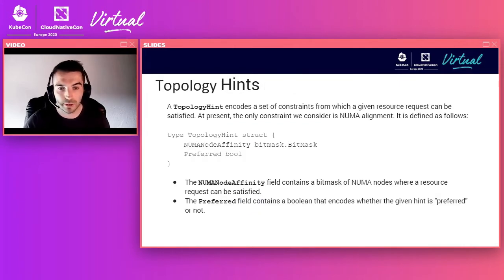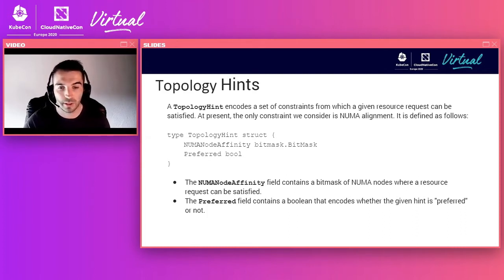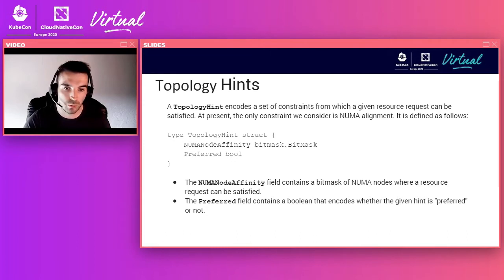A topology hint is a construct used to describe how a resource request can be satisfied. It currently consists of two fields: the NUMA node affinity, a bitmask of NUMA nodes where a resource request can be satisfied; and the preferred field, a boolean that encodes whether that given hint is preferred or not.